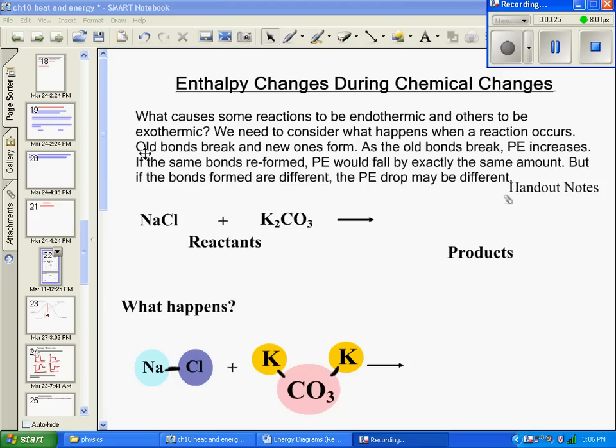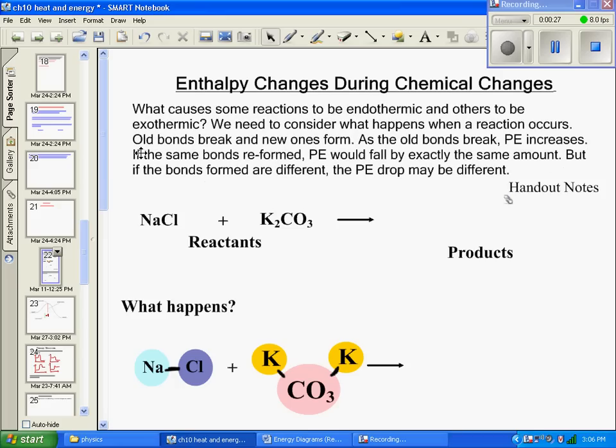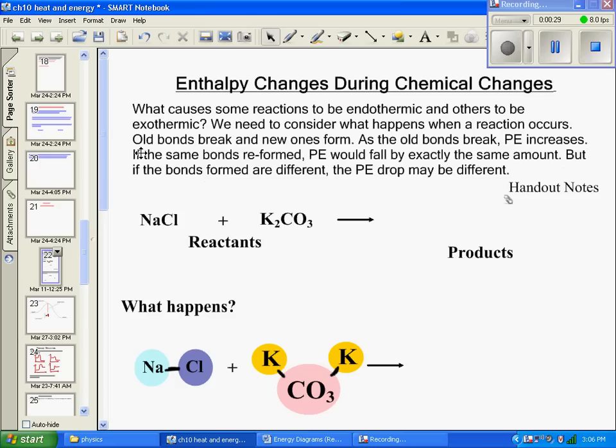So we start off with a question I have on here. What causes some reactions to be endothermic and others to be exothermic? Now, endothermic, if you remember, is a reaction that requires heat. Heat goes into the reaction as it happens. And exothermic, exo meaning exit, that's where heat is leaving the reaction. Now, what causes that to happen? Well, first we have to look at kind of what's going on during a reaction.